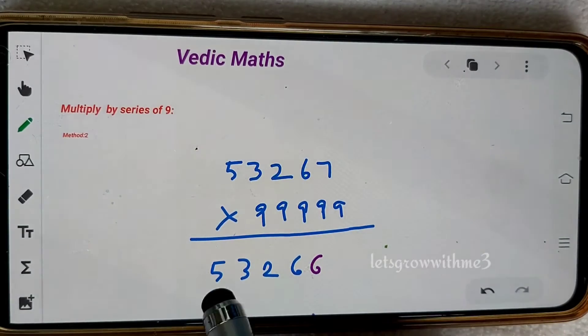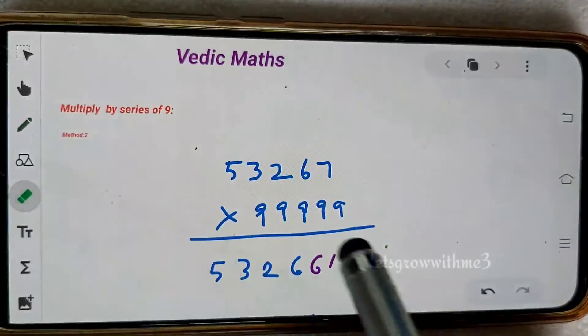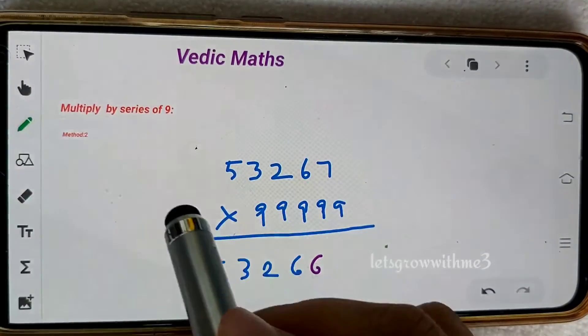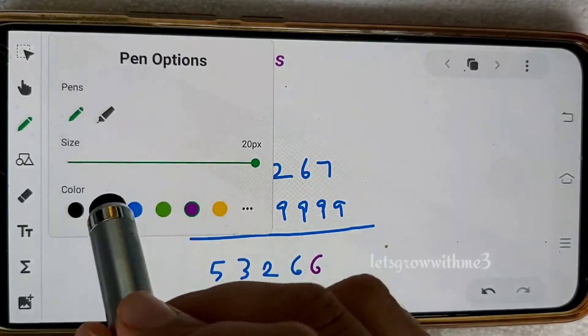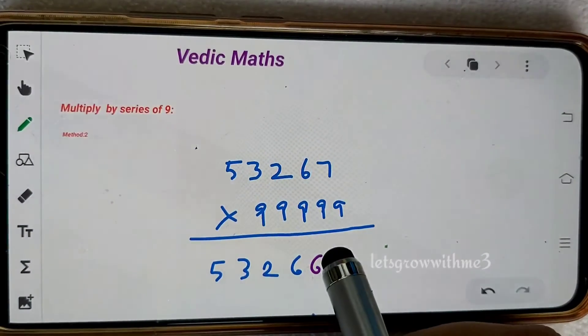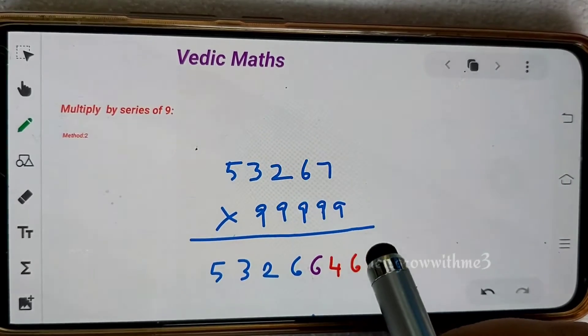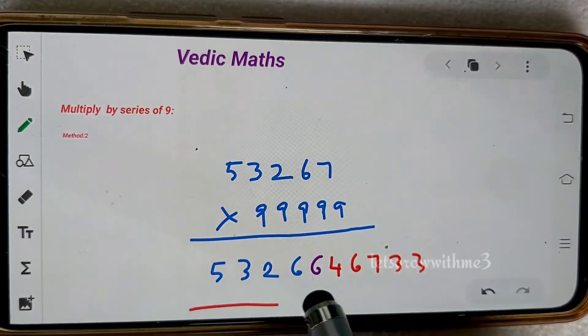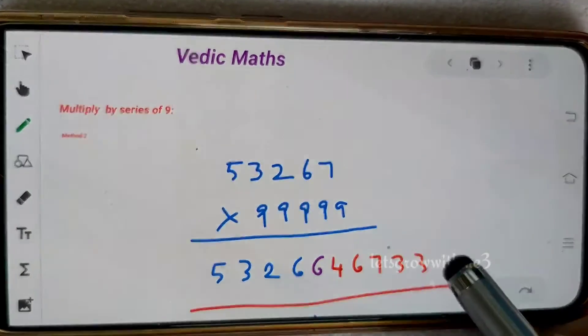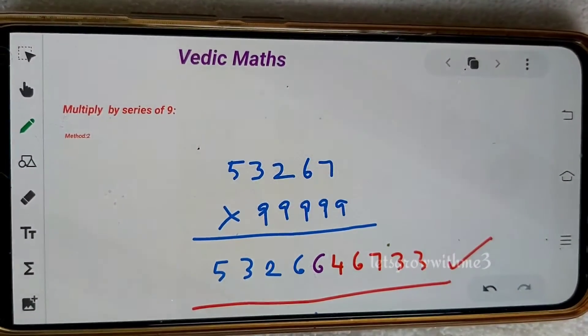One space we need to write as it is, and then one space we will decrement by one, then write complement. I'm trying to change the pen. 5 plus 4 is 9, 3 plus 6, then 2 plus 7, then 6 plus 3, then again 6 plus 3. That's our answer.